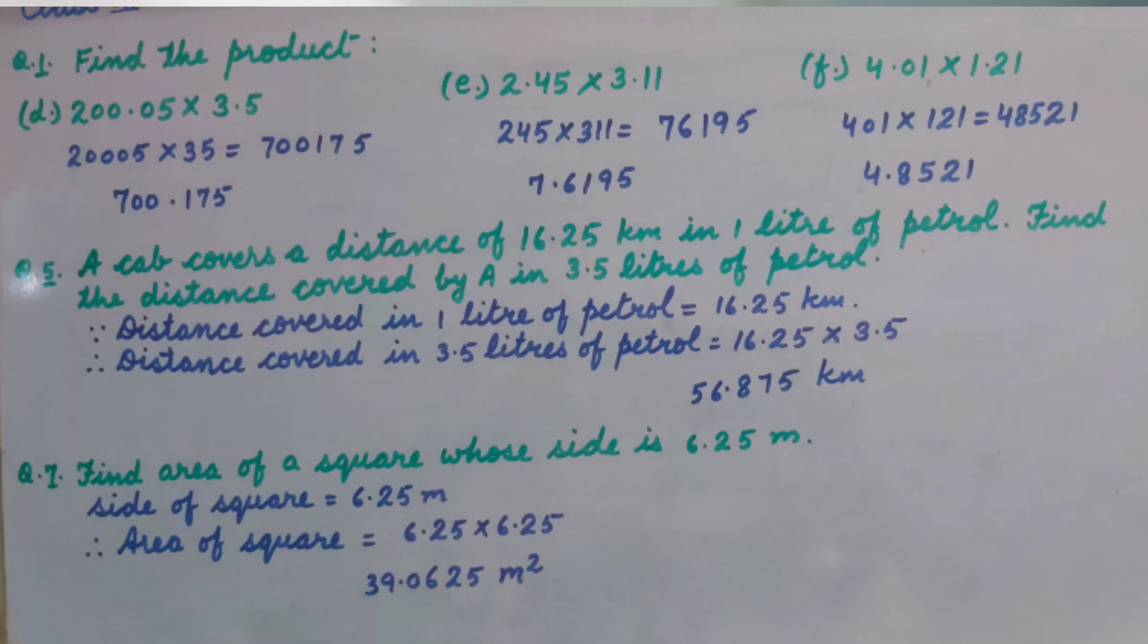Part E: 2.45 multiplied by 3.11. So 245 multiplied by 311 is 76,195. We have 4 decimal places, so the answer is 7.6195.